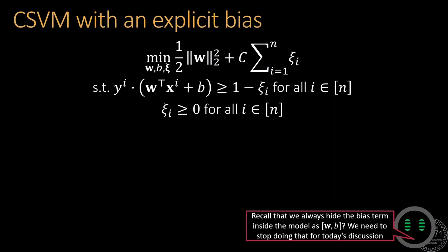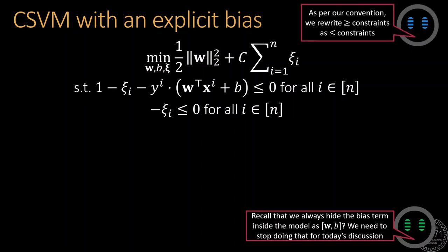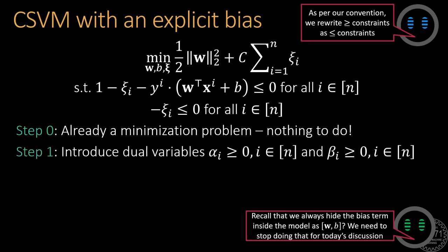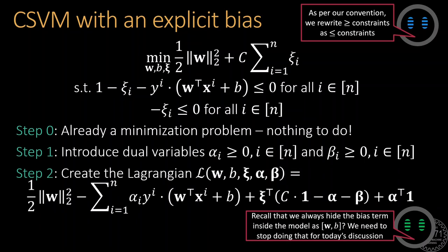The calculations here are on standard. We convert all constraints to less than or equal to constraints as a matter of convention, ensure that we have a minimization problem at hand, and then introduce dual variables to create the Lagrangian.